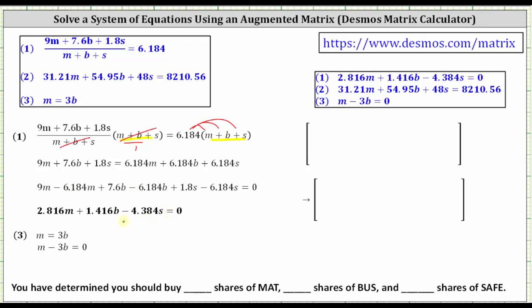Now equation 1 is in standard form: 2.816M + 1.416B - 4.384S = 0. Equation 2 is already in standard form. And for equation 3, we need the B term to be on the left side, so we subtract 3B on both sides, giving us M - 3B = 0. Now that we have all three equations in standard form, we can write the augmented matrix, where each equation will give us one row in the augmented matrix.